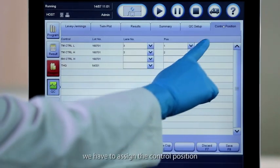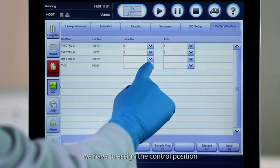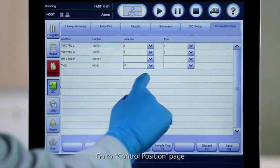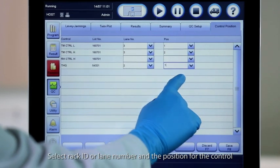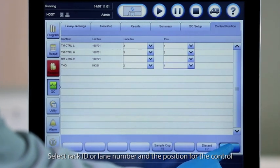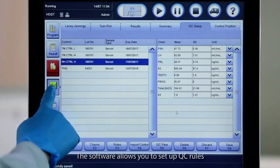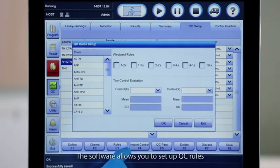Just like calibration, we have to assign the control position. Go to Control Position page. Select Rack ID or Lane Number and the position for the control.